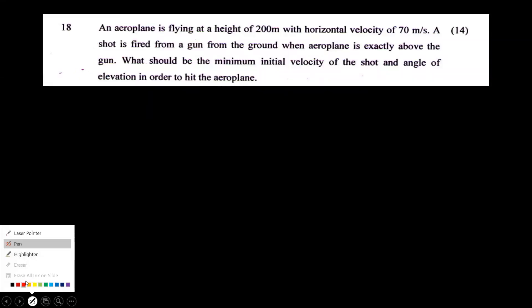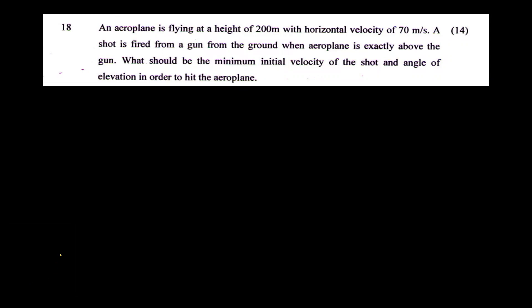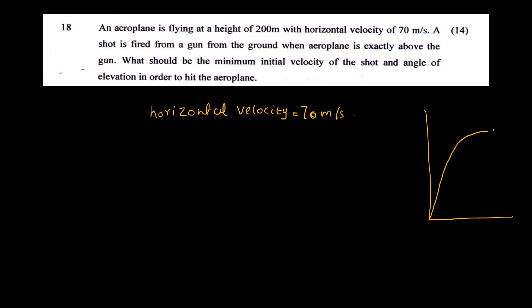An aeroplane is flying at a height of 200 metres with a horizontal velocity of 70 metres per second. A shot is fired from a gun on the ground when the aeroplane is exactly above the gun. What should be the minimum initial velocity and angle of elevation in order to hit the plane?